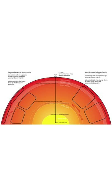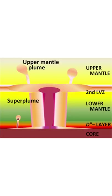These are theorized to form at the core-mantle boundary, where an abnormally hot plume of rock accumulates. It is shaped like a mushroom, with a longer conduit — the tail — connecting the bulbous head to its base. The head expands in size as the plume rises.